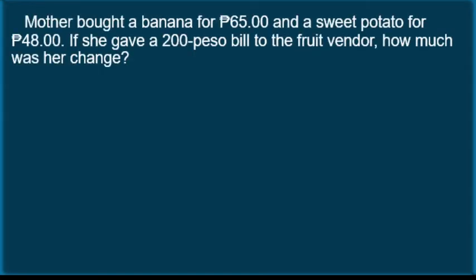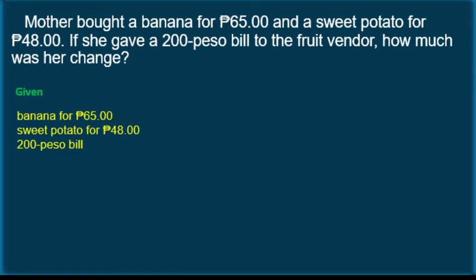Mother bought a banana for 65 pesos and a sweet potato for 48 pesos. If she gave a 200-peso bill to the food vendor, how much was her change? We can pause the video again. The given information in this problem are: banana for 65 pesos, sweet potato for 48 pesos, and a 200-peso bill. This given information can be used to make a number sentence.